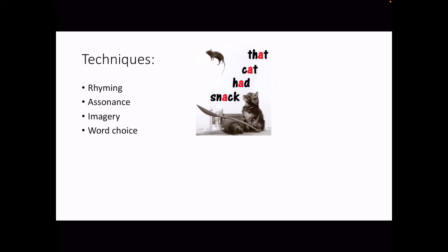Techniques. The main techniques to remember is that this poem rhymes unlike all the others. We've got assonance to make that shark just sound really, really smooth. That cat had snack, right? That is a good way to think of it. It doesn't rhyme because the last letter doesn't rhyme, but it has that assonance, that same vowel sound.